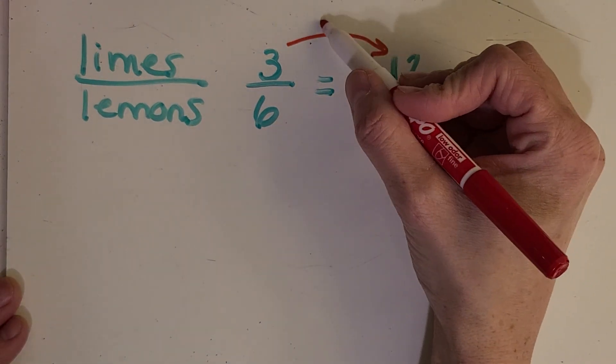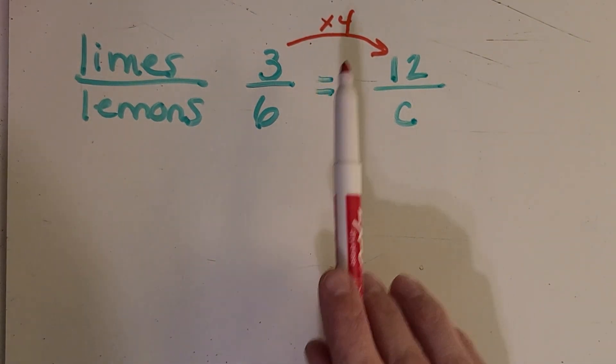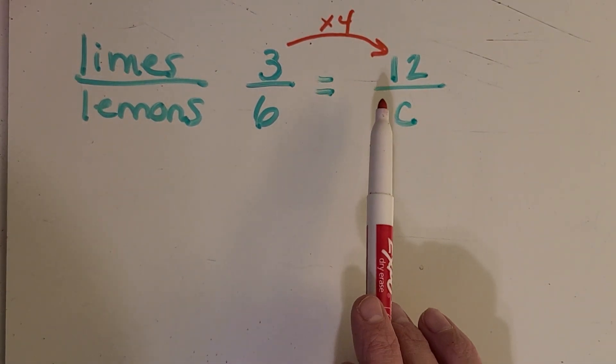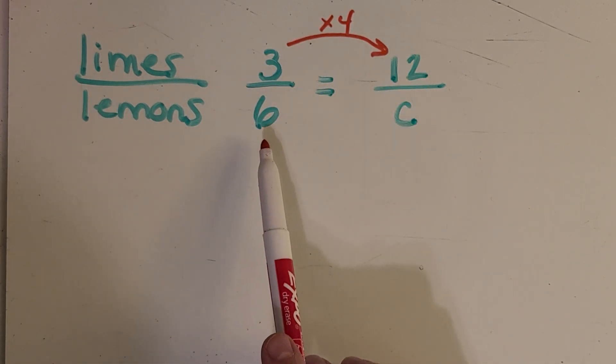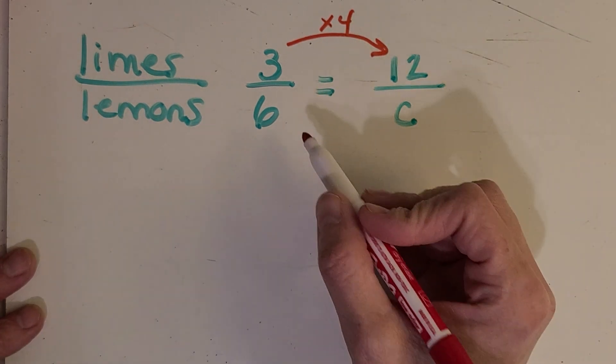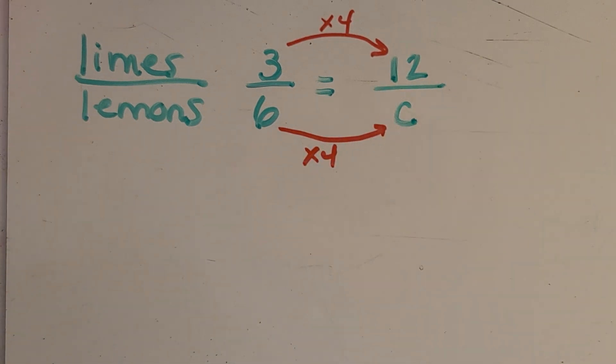Yeah, 3 times 4. So then also think back to your knowledge of equivalent fractions. So if I do something to the numerators, what do I do to the denominators? Yeah, same thing. So this is also going to be times 4. So then what does C equal in this proportion?